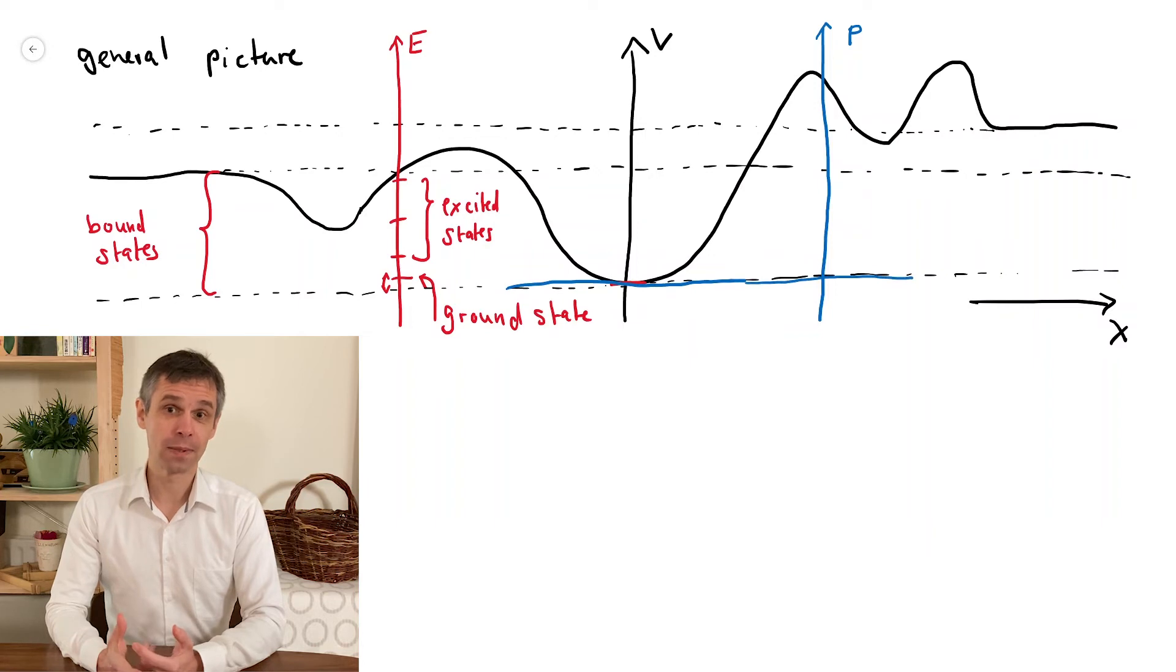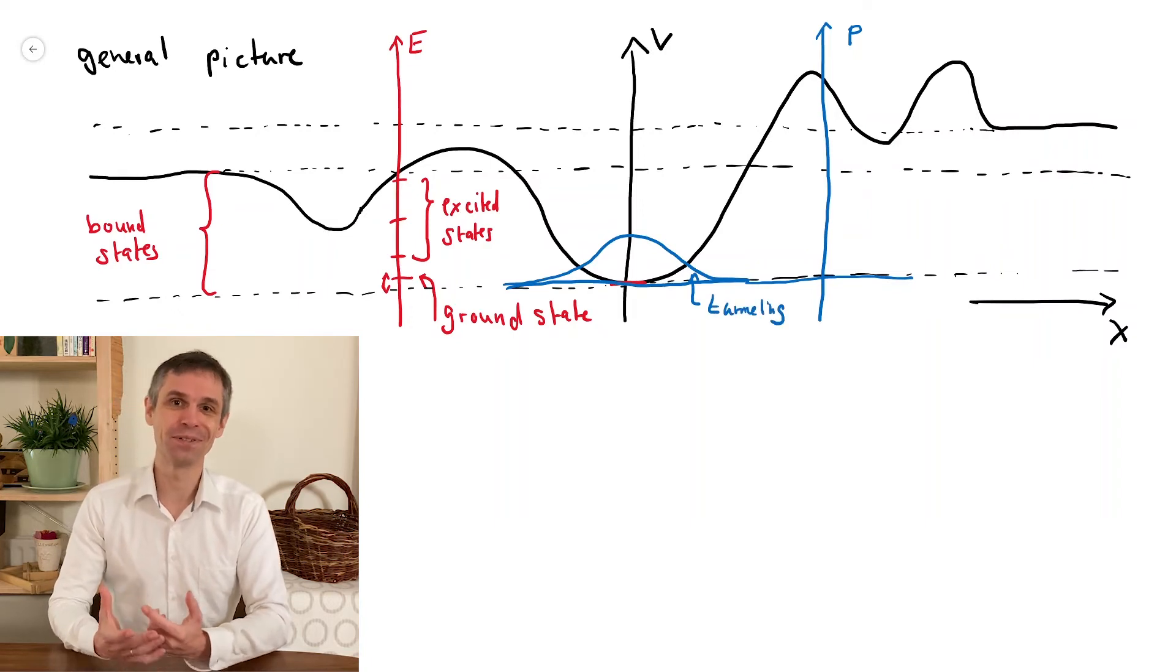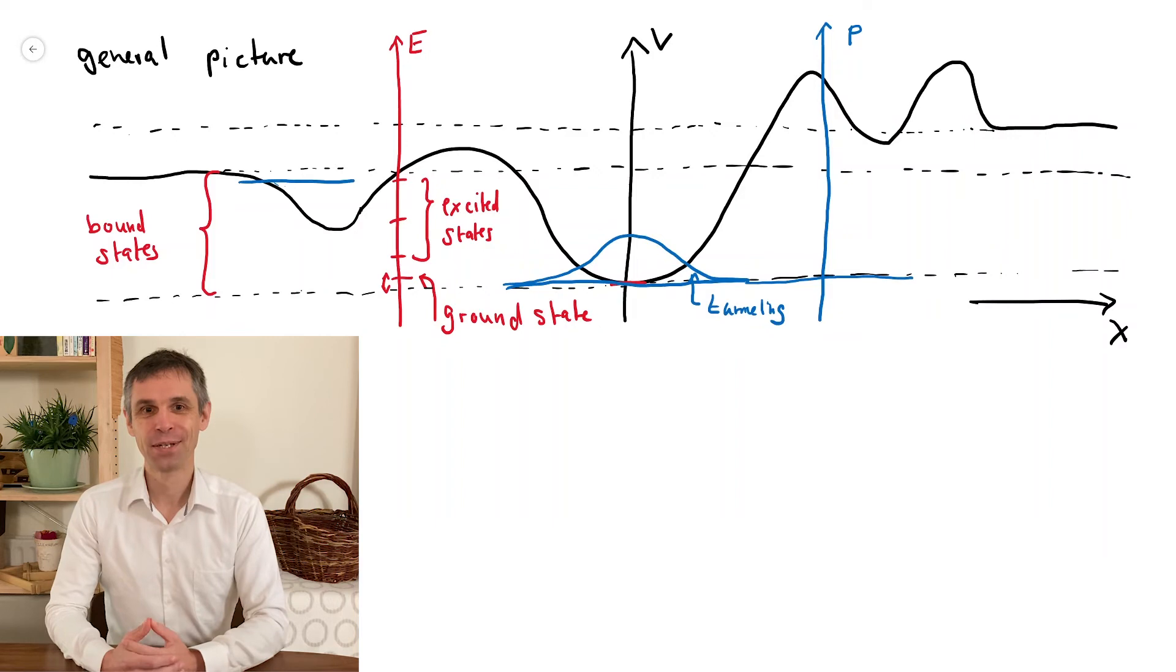And if we look at this, I choose a conveniently placed position of the horizontal axis so that we can nicely compare to the potential, we find that this can have these tails into some classically forbidden regions.